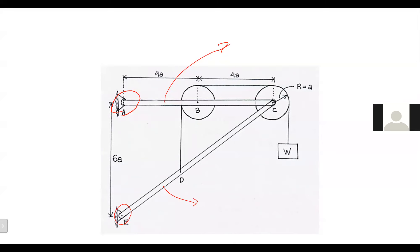We have two multi-force members, AC and CE, and there is a pulley system connected to those two members. At C, we have a pulley. There is a weight W, so all results are supposed to be in terms of W and A. The results will be expressed in W and A.